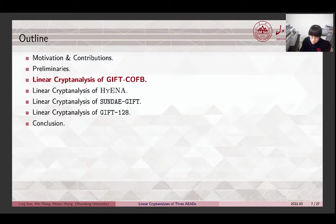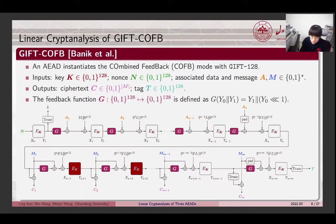Now let's move on to the linear cryptanalysis of GIFT-COFB. GIFT-COFB is an AEAD that instantiates the combined feedback mode with GIFT-128. The input of the encryption algorithm includes a 128-bit key, a nonce, associated data and message. The outputs are ciphertext C and a 128-bit tag. The EK functions in the figure are referred to as the cipher GIFT-128. The ciphertext generating phase exploits the feedback function G, which is a linear function over the 128-bit input.